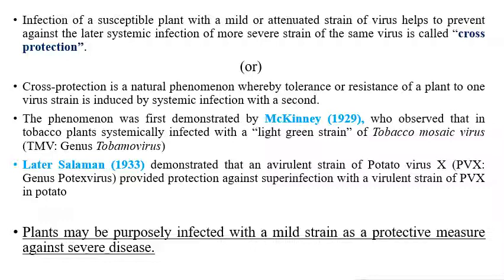Infection of a susceptible plant with mild strains or attenuated strains — attenuated meaning complete or partial loss of virulence — can give protection against the more severe strains of the same virus when systemic infection occurs. That is called cross protection.